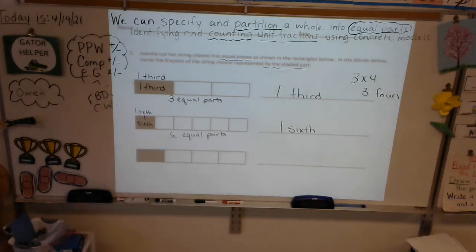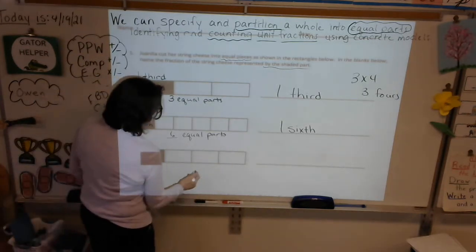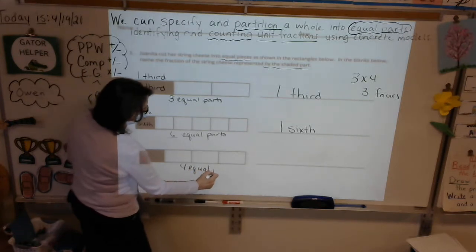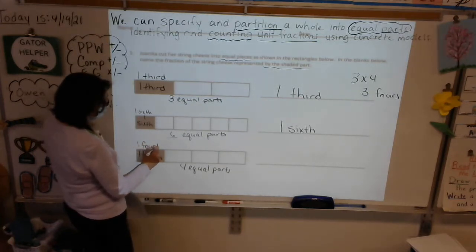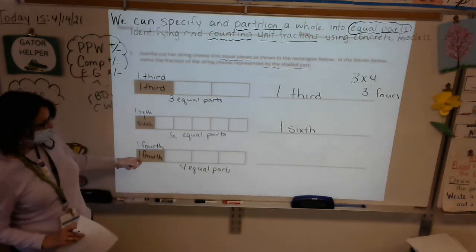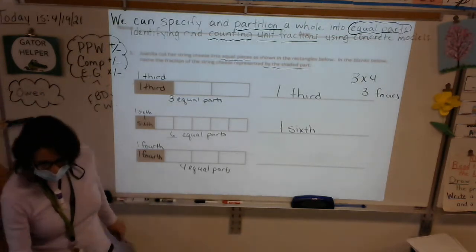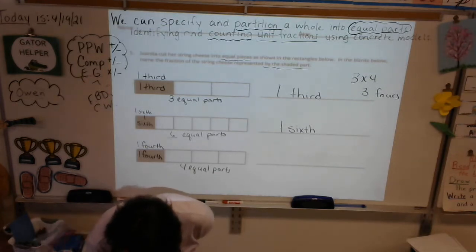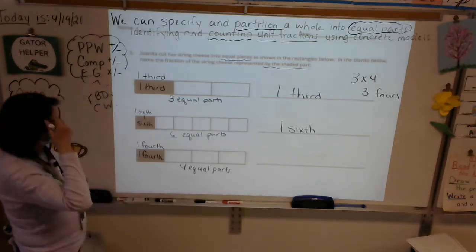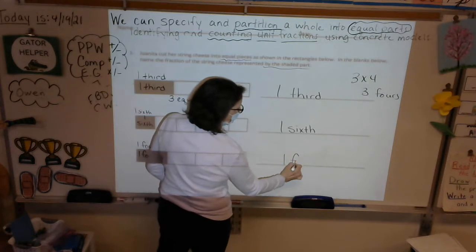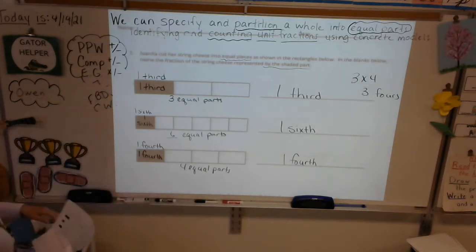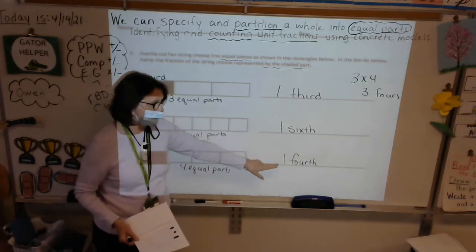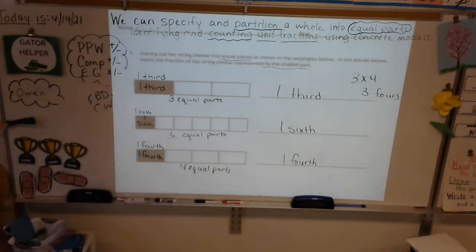How many equal parts in the next one? Just four. We have four equal parts. If we have four equal parts, what will one part be called? One fourth. Very good — one fourth. Friends at home, you can use a different colored marker to label that part. The shaded part represents one — it's called a unit fraction because we're counting just one. Our unit here is thirds, our unit here is sixths, our unit here is fourths.